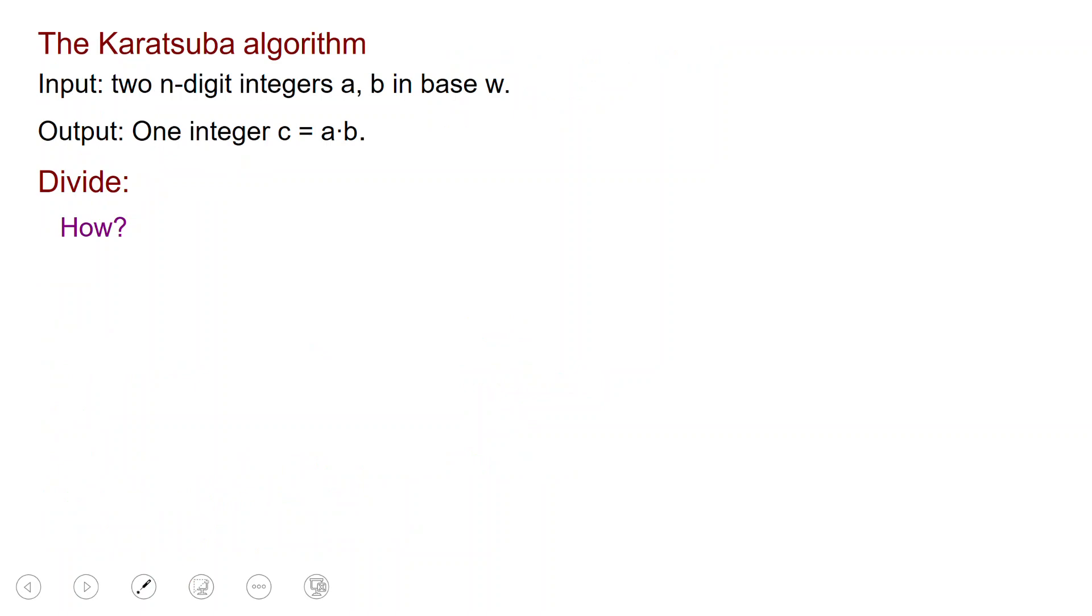This is the basic idea, and Karatsuba just does this recursively. So let us now see the Karatsuba algorithm. Now we have two n-digit integers A and B in base W, and we want to compute the integer C which is A times B.